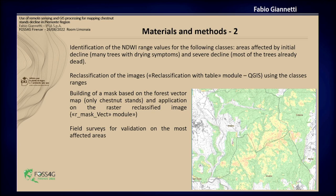We applied simply the mask, and what we obtained is a map like this, as you can see in this image, in which the healthy vegetation of chestnut is shown in green, in yellow we have the initial decline, and in red the areas more affected by the problem that are suffering severe decline.